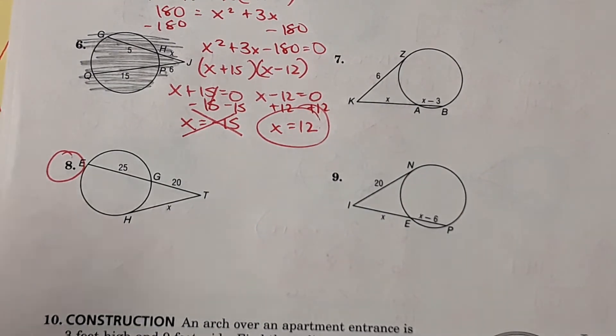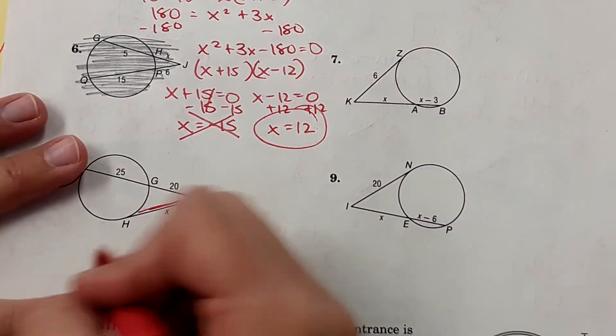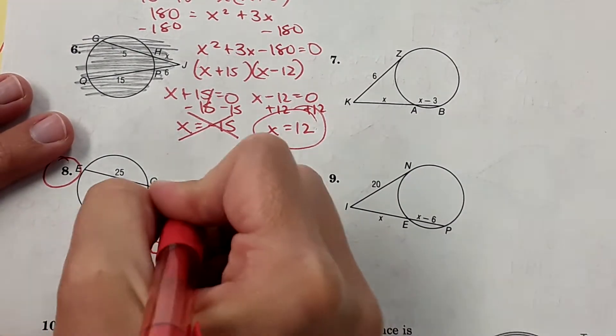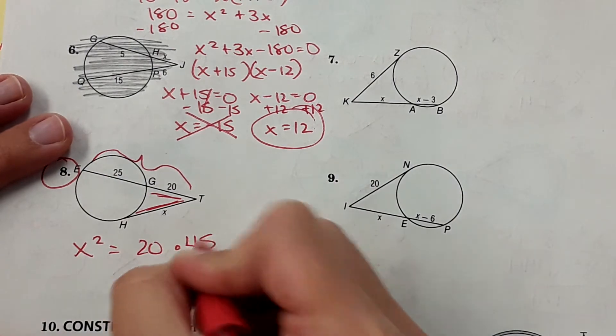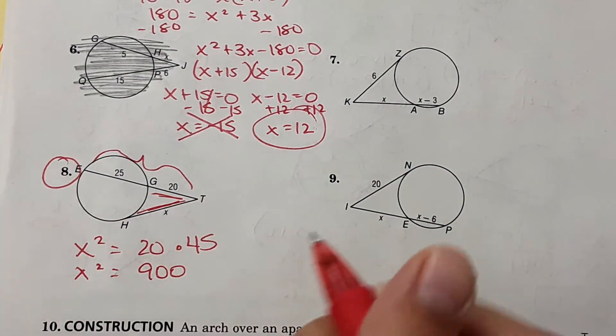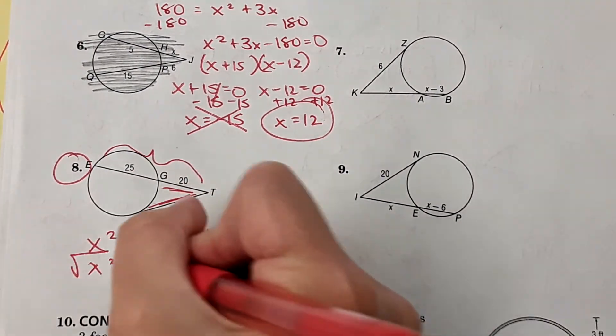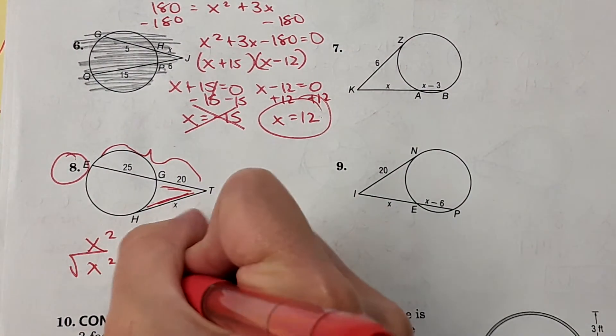And number 8, we're going to do, it's x squared equals 20 times 45. x squared equals 900. Take the square root of both sides, and you get x equals 30.